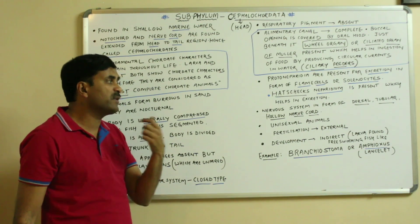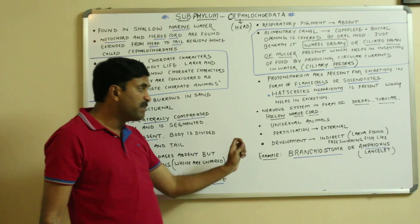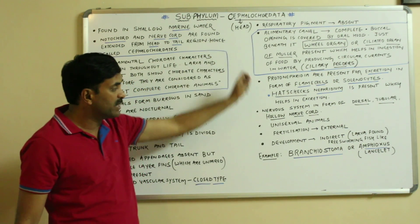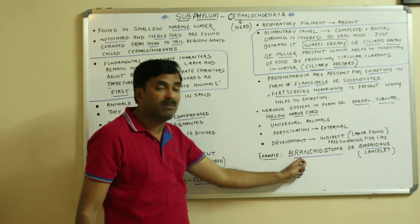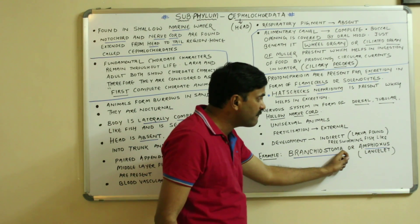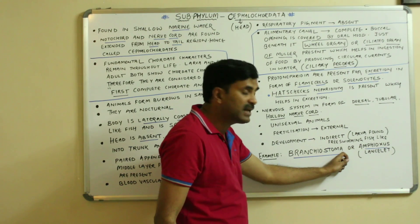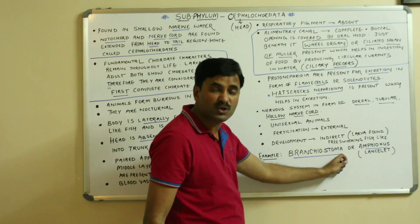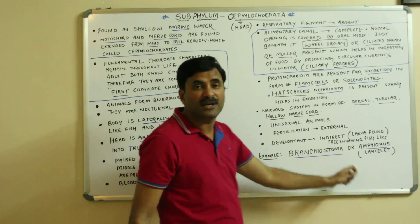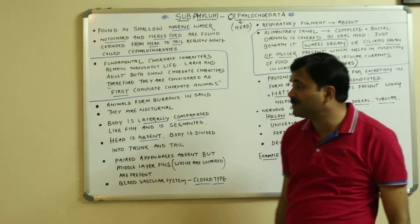The best example of Cephalocordata is Branchiostoma, also called amphioxus or lancelet. Thanks a lot for watching. You can take a screenshot of this video if you want.